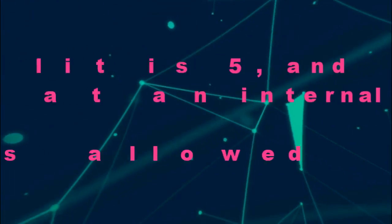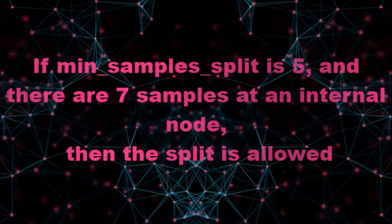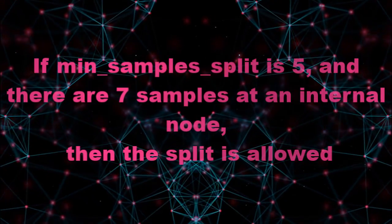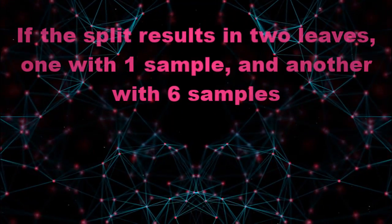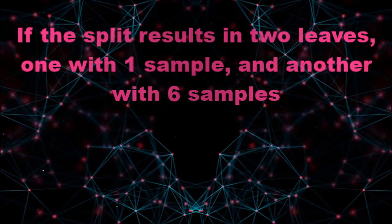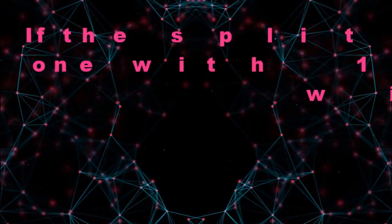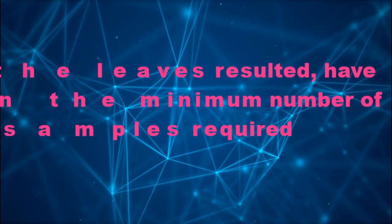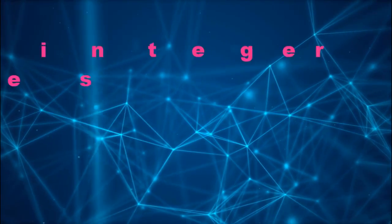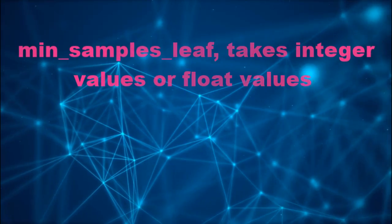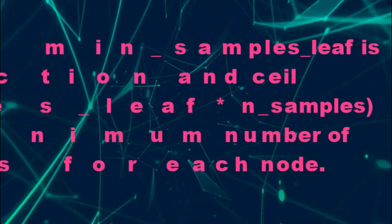For instance, if minimum sample split is 5 and there are 7 samples at an internal node, then the split is allowed. But if the split results in 2 leaves — one with 1 sample and another with 6 samples — and minimum sample leaf is 2, then the split won't be allowed. This is because one of the leaves would have less than the minimum number of samples required to be at a leaf node. Minimum sample leaf takes integer or float values and its default value is 1.